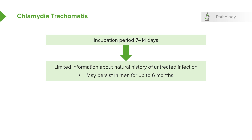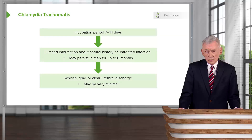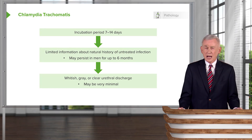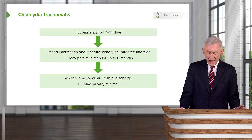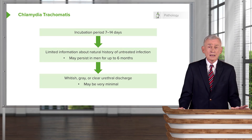The natural history of untreated infection — we don't know an awful lot about it. What we do know is that these organisms may persist in the urethra of men for up to 6 months. The discharge that's produced is not nearly so purulent; it's a whitish-gray and sometimes even clear, and sometimes it's even minimal.